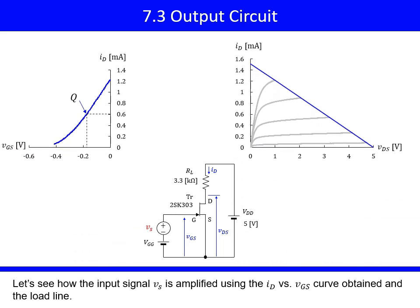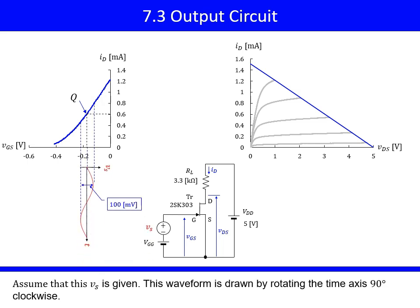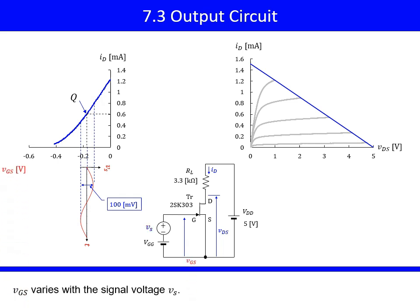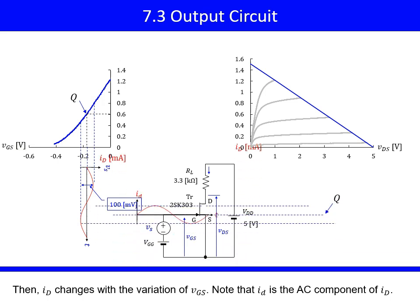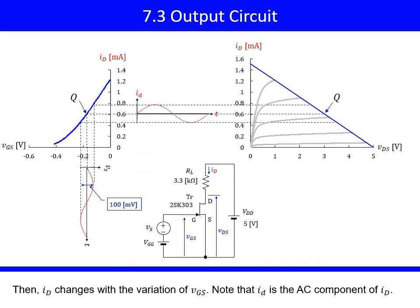Let's see how the input signal Vs is amplified using the ID versus VGS curve obtained and the load line. Assume that this Vs is given. This waveform is drawn by rotating the time axis 90 degrees clockwise. VGS varies with the signal voltage Vs. Then, ID changes with the variation of VGS. Note that lowercase id is the AC component of uppercase ID.